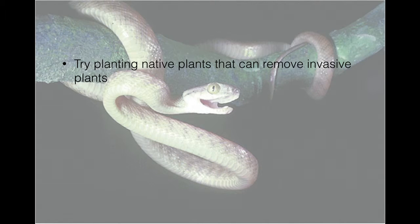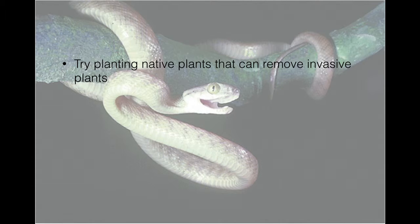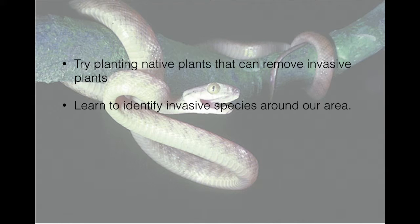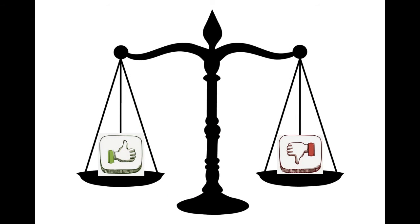To help prevent invasive species, try planting native plants that can remove invasive ones. Learn to identify invasive species in your area so you know what actions to take. Clean your shoes, car tyres, and outdoor equipment regularly to remove insects or plant parts that may spread invasive species to other areas. In general, consider the pros and cons before allowing a species to enter a region.